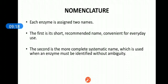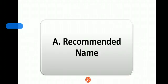The second naming system is the systematic name, which is used when an enzyme must be identified without any ambiguity. These two systems depend on three basic principles.